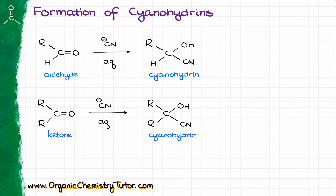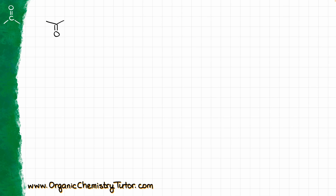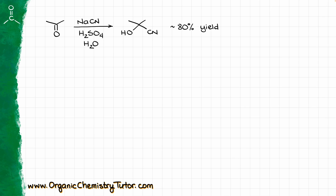Making cyanohydrins is rather easy. If I took acetone and reacted it with sodium cyanide and aqueous sulfuric acid, I would get the cyanohydrin in a roughly 80% yield, which is not that bad. Mechanistically speaking, this reaction is a sequence of a nucleophilic attack and a proton transfer.